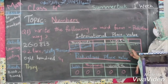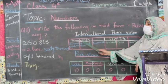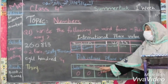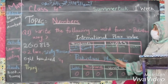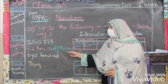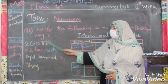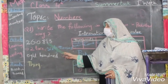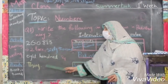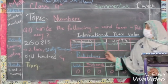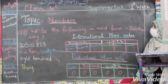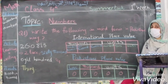In the international place value system we use units in thousands. In the Pakistani system we use units, thousands, and lakhs. For example, in the international system we have twenty-six thousand eight hundred and thirty, and in Pakistan we will write it as twenty-six thousand eight hundred and thirty as well. The rest of the questions we will solve like this, but first make the charts for yourself to make it easier. Thank you. I hope you will understand.